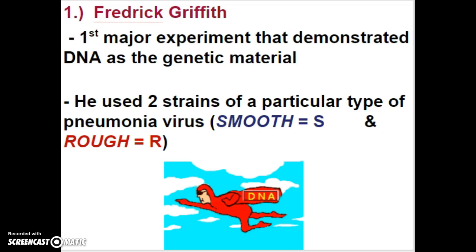Frederick Griffith was one of the people who did the first major experiment that demonstrated that, more than likely, DNA was the genetic material of the cell. And this is how he did this.